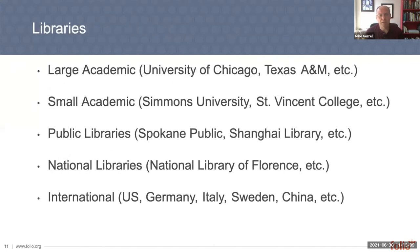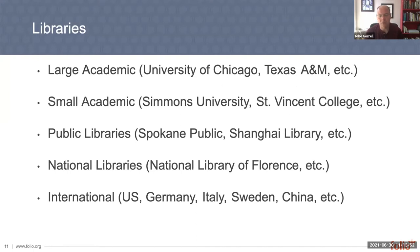We have many different types of libraries. Several large academic libraries — institutions like University of Chicago, Texas A&M, UMass Amherst, and Cornell, which you're hearing from today. We also have smaller academic institutions like Simmons University and St. Vincent College. Interestingly, we also have public libraries — Spokane Public Library and Shanghai Public Library in China — as well as national libraries such as the National Library of Florence. And there's a growing international presence throughout Europe and an increasingly growing community in China implementing and contributing back to Folio.